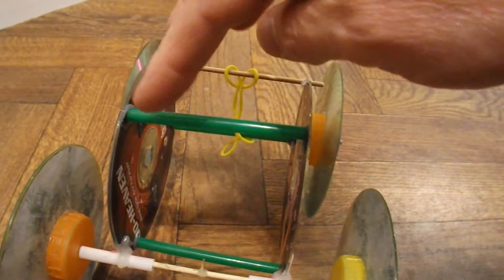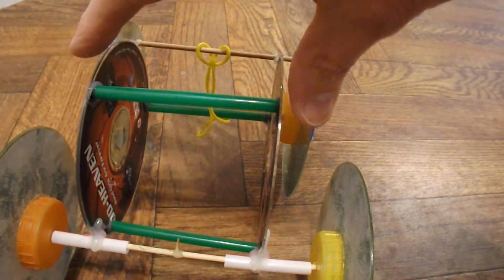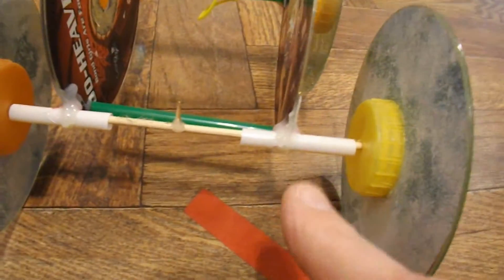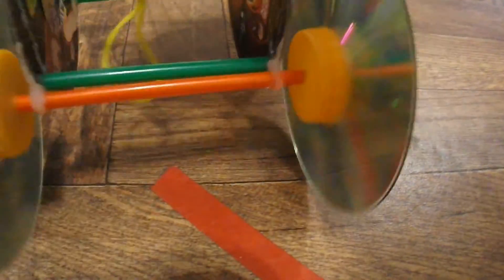And then we've just got drinking straws holding the body CDs apart. Drinking straws for the axle tubes. Front and back.